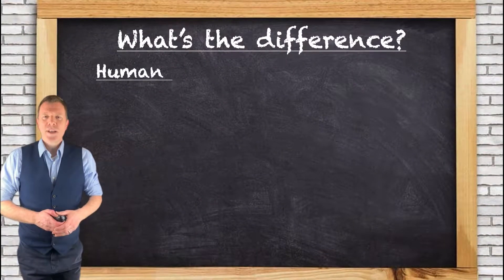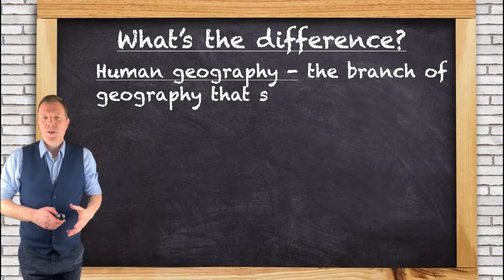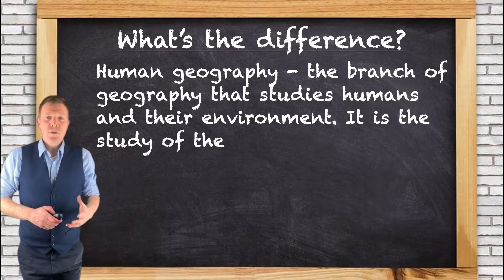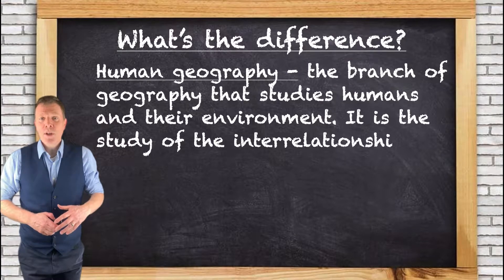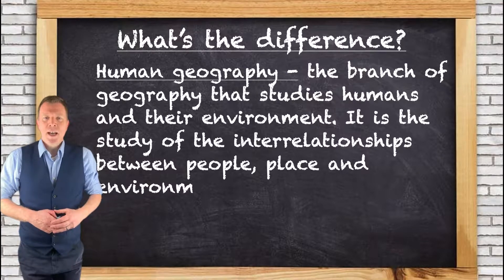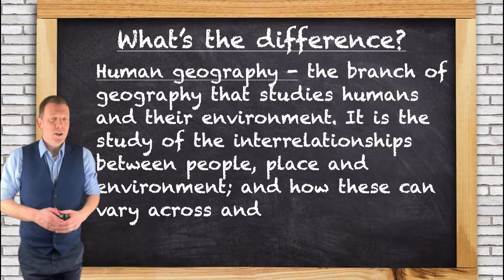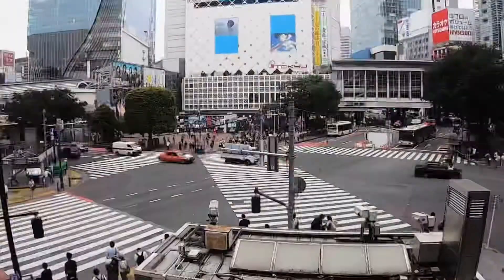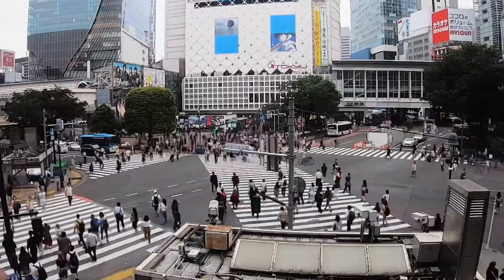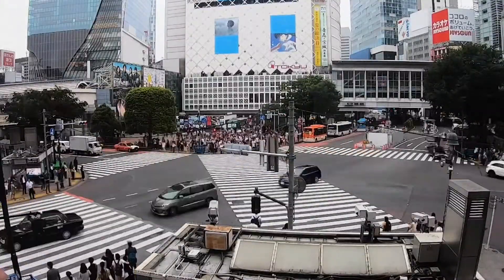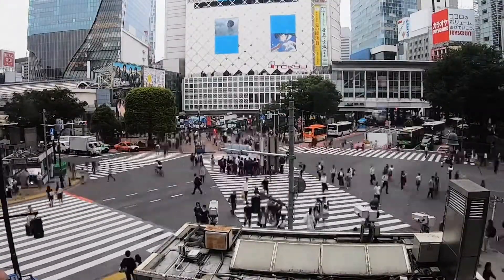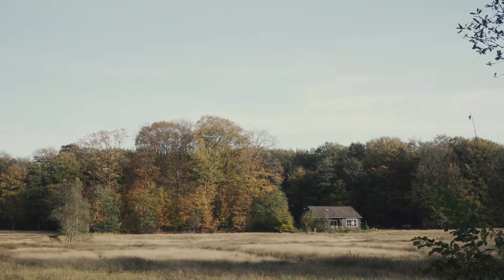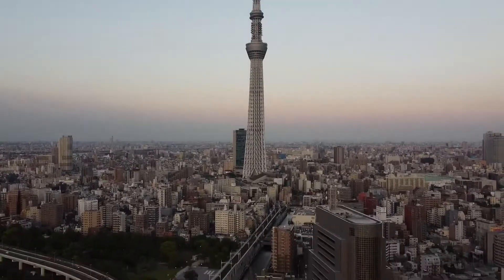Human Geography is the branch of geography that studies humans and their environment. It's the study of the interrelationships between people, place and environment, and how these can vary across and between locations. In Human Geography, you'll look at how and where people live, from the smallest isolated dwelling to the largest megalopolis.